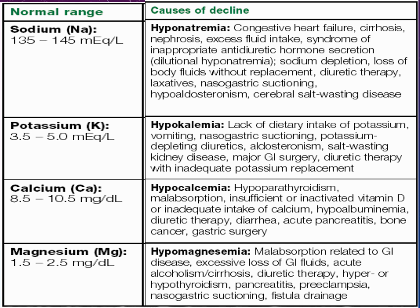If you end up with hypocalcaemia due to reduced calcium levels, this can be because of hypoparathyroidism, malabsorption, insufficient or inactivated vitamin D, inadequate intake of calcium, hypoalbuminaemia, diuretic therapy, diarrhoea, acute pancreatitis, bone cancer and gastric surgery. If you end up with reduced magnesium levels — hypomagnesaemia — this is due to malabsorption related to GI disease, excessive loss of GI fluids, acute alcoholism, cirrhosis, diuretic therapy, hypo- or hyperthyroidism, pancreatitis, pre-eclampsia, nasogastric suctioning and fistula drainage.